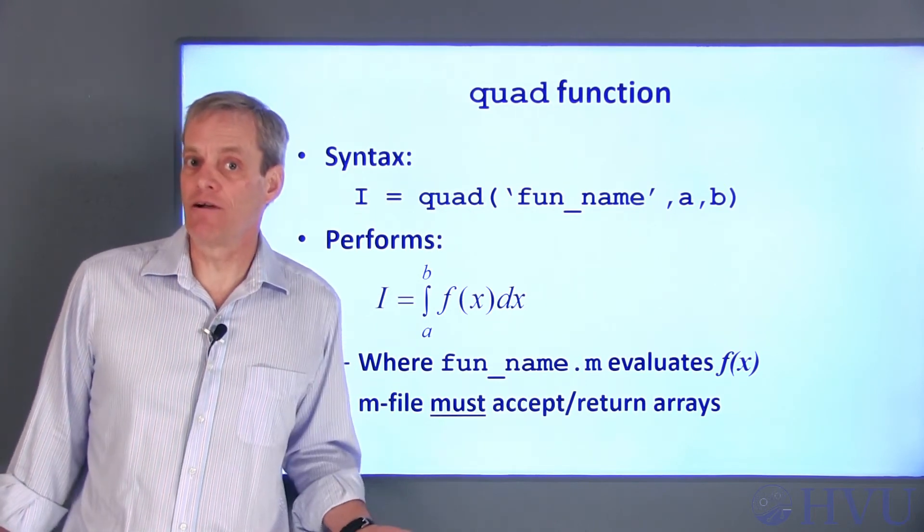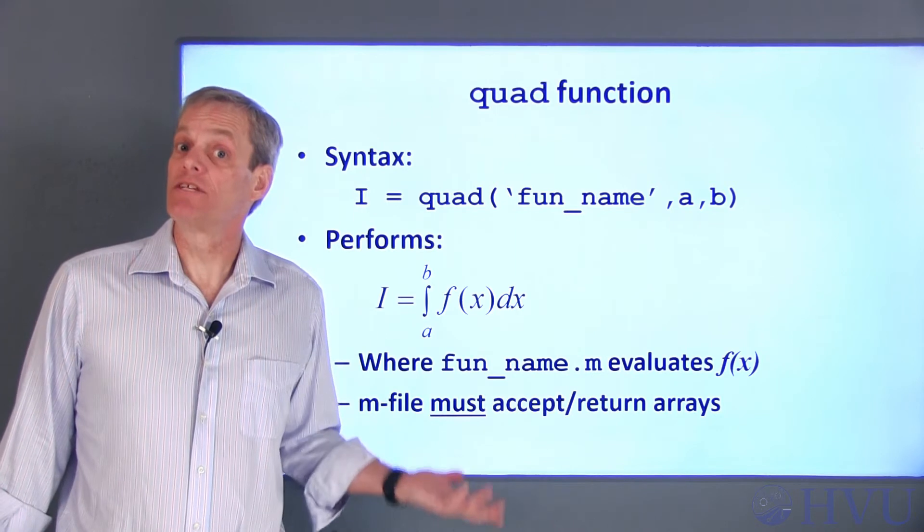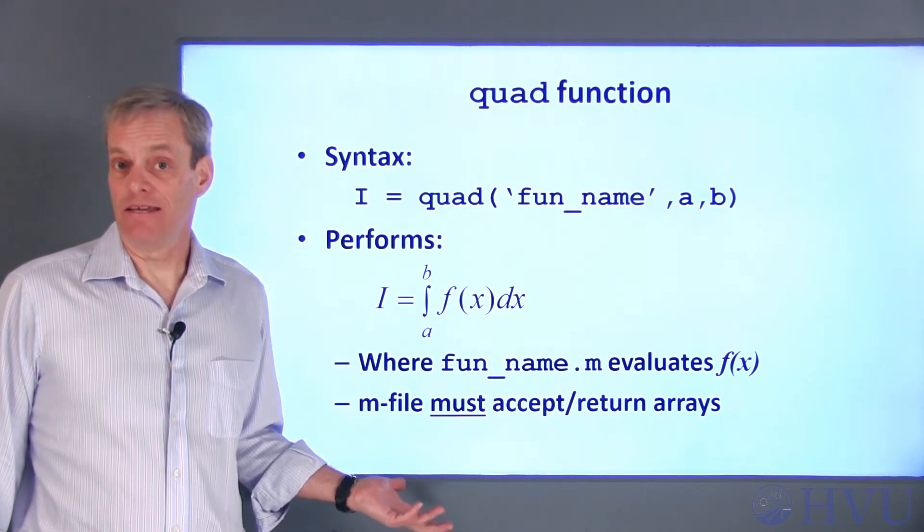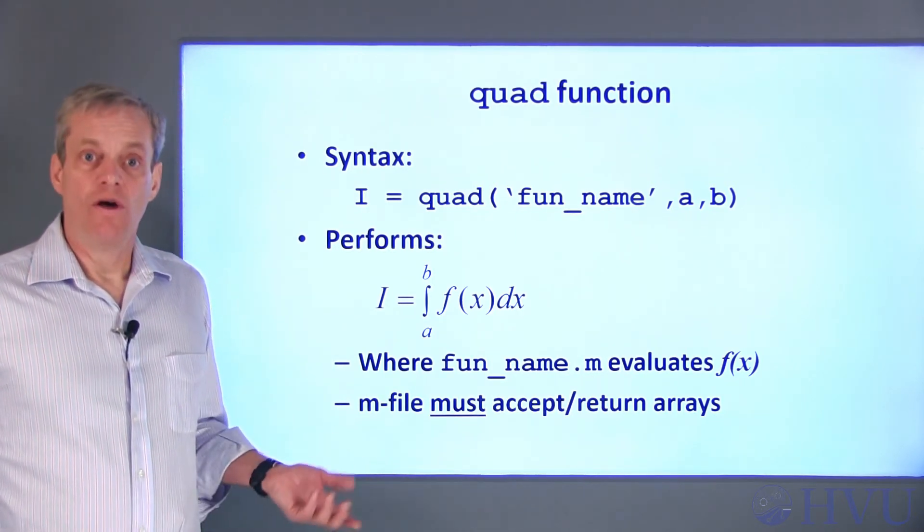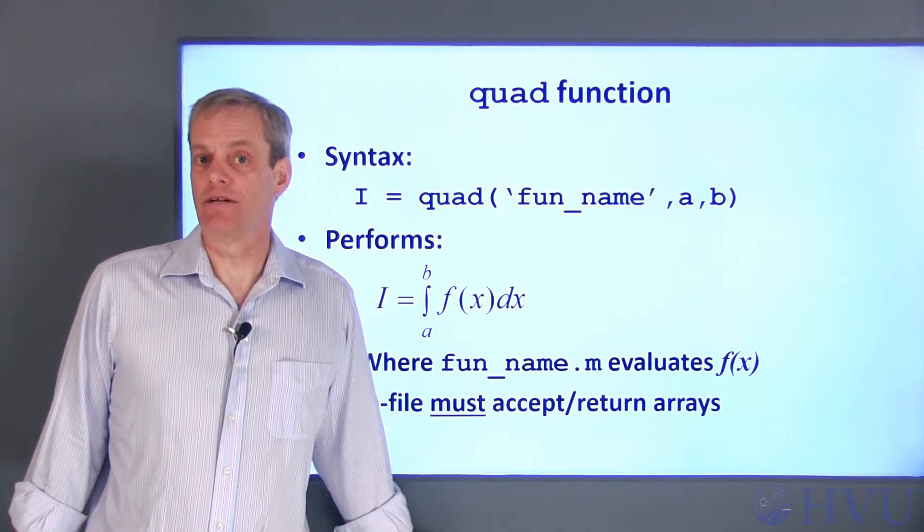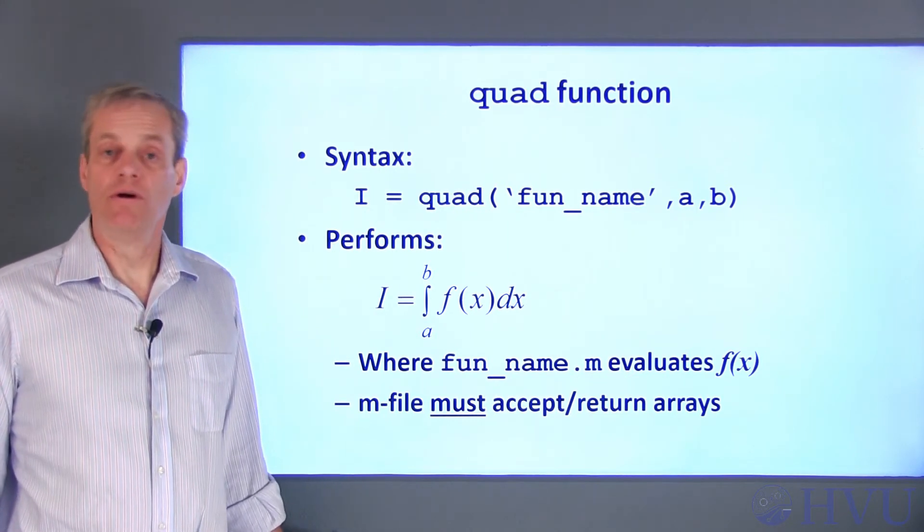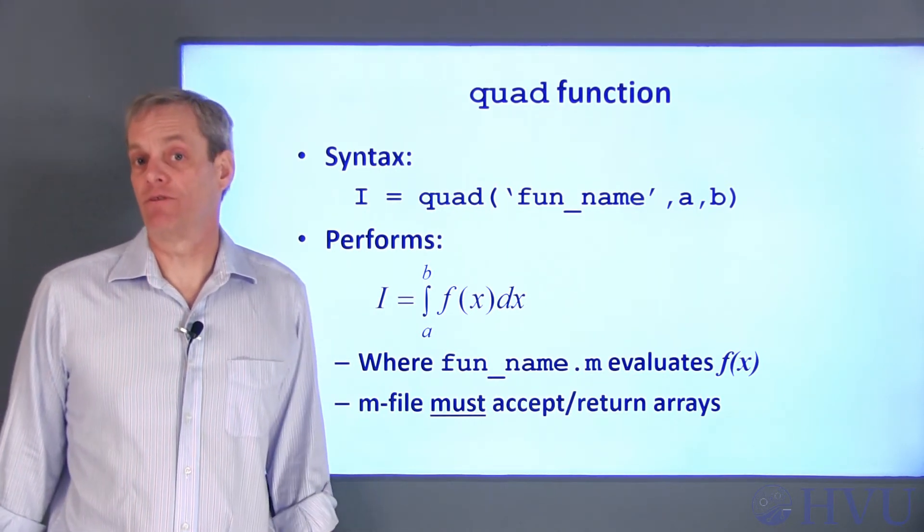The two results are compared, and if the difference between them is above a certain tolerance, the spacing is reduced again and the integral is recalculated. Quad and Quad L will keep reducing the spacing and redoing the integral until the difference between solutions is below some threshold value. Once that happens, they return the result.